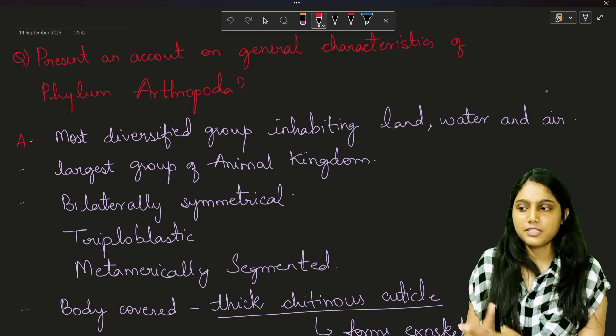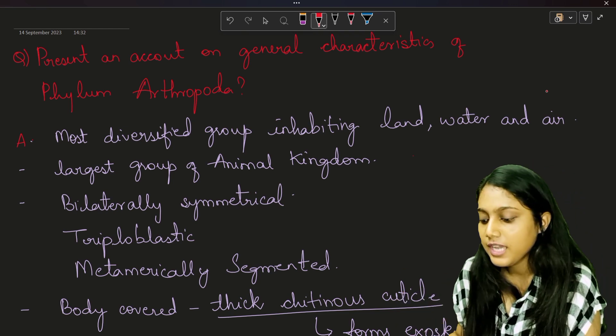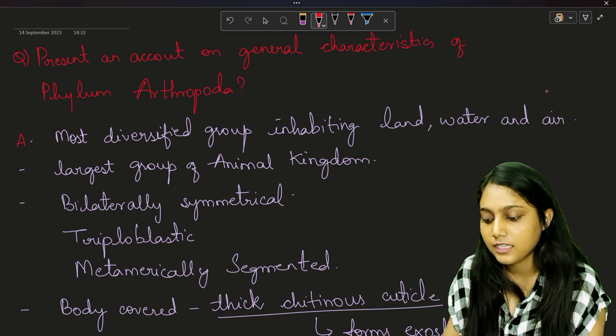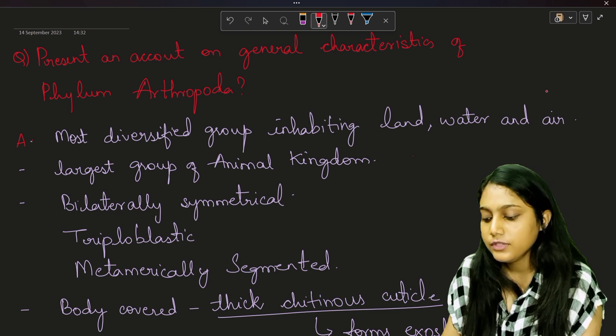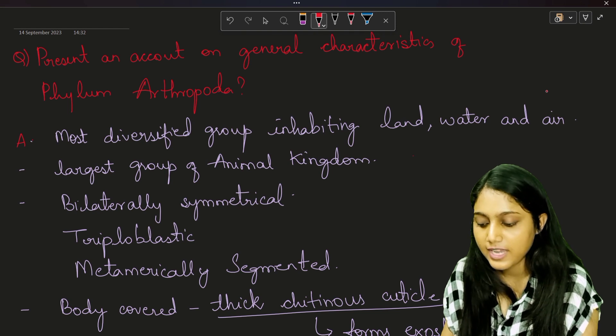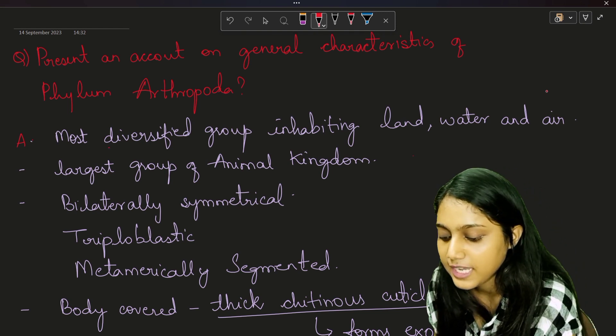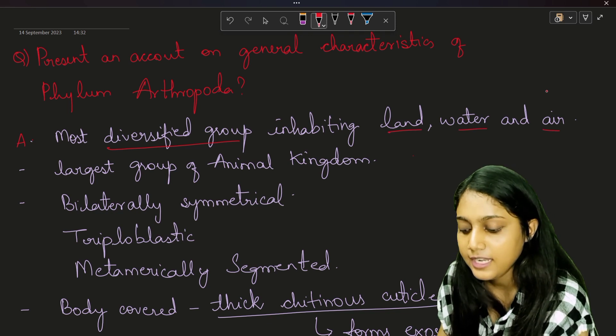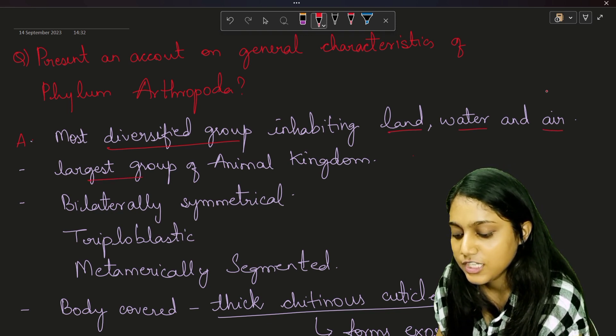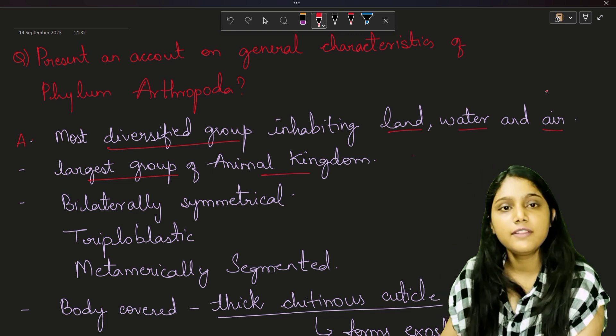In the next video we will discuss classification, but for now let us discuss only the general characteristics of Phylum Arthropoda. So here is your question: present an account on general characteristics of Phylum Arthropoda. Now this group or this phylum is considered to be the most diversified group inhabiting land, water and air, hence this phylum is considered to be the largest group of animal kingdom or the largest phylum of animal kingdom.